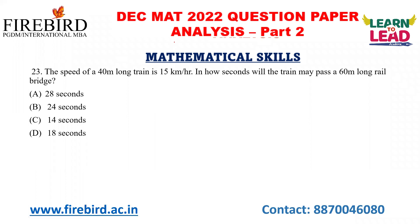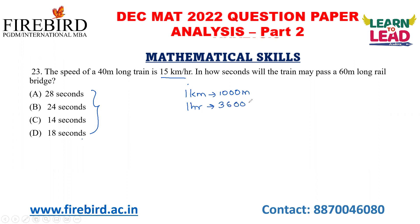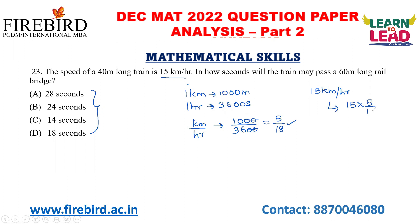Now, the speed of a 40-meter long train is 15 kilometers per hour. In how many seconds will the train pass a 60-meter long bridge? The speed is in kilometers per hour, but the time is required in seconds, so we need to convert. I know that 1 kilometer is 1000 meters and 1 hour is 3600 seconds. So to convert kilometers per hour to meters per second, multiply by 1000 divided by 3600, which is 5 by 18. So 15 km/h equals 15 into 5 by 18 meters per second.